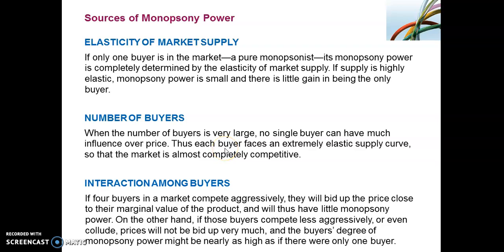We are continuing with the final video for this week. It deals with sources of monopsony power and lastly bilateral monopoly. There are three key sources: the first is elasticity of market supply, then we have the number of buyers, and lastly the interaction amongst buyers. These factors are similar to the sources of monopoly power, where we looked at elasticity of market demand, the number of sellers, and the interaction amongst sellers.